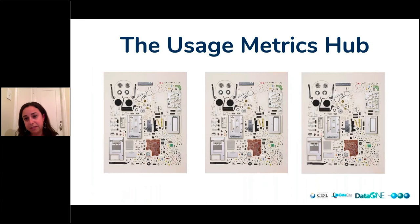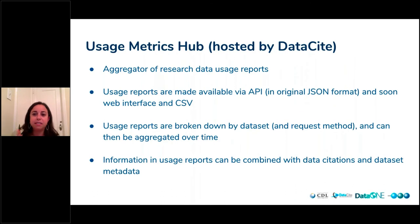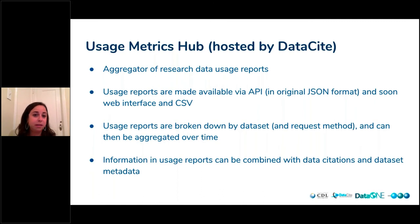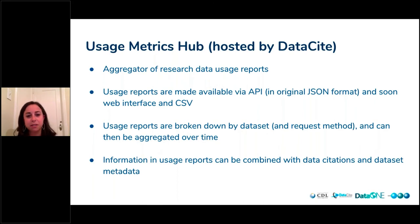We've mentioned the usage metrics hub, hosted by DataCite. It's really important because if we actually want to do aggregations of this data, it needs to be in a central place. What happens is we send that report I showed the screenshot of over to the usage metrics hub through an API right now, though if you wanted to do it manually through a CSV, that's also something we could work with. The benefit is that other people can then access these usage metrics, and also that DataCite can do aggregation services — by user using an ORCID, by institution, by funder, or anything with a persistent identifier. So it would not just be by repository — you could get a better sense of the usage happening with your research data.